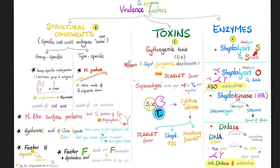Streptolysin S is a hemolysin, but it is oxygen stable — not damaged by oxygen. Streptolysin O is another hemolysin but is oxygen labile — oxygen will damage this toxin. Your body makes antibodies against streptolysin O called anti-streptolysin O antibody; if elevated in your blood, it means you're probably suffering from a streptococcal infection. Streptokinase is a famous fibrinolysin that converts plasminogen (inactive) to active plasmin, a clot buster, making it easier for bacteria to spread throughout your body — which is why streptococcal infections like cellulitis and necrotizing fasciitis are widespread.